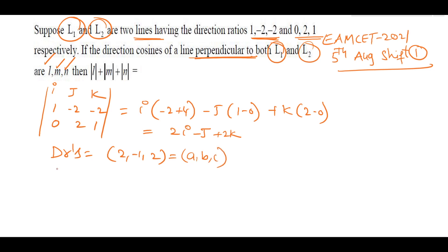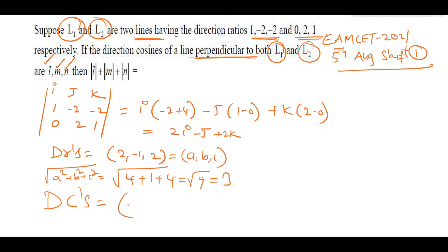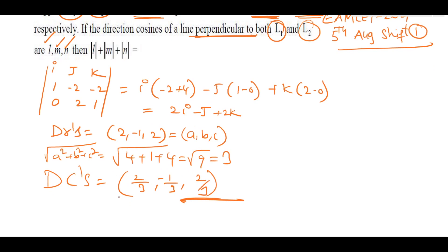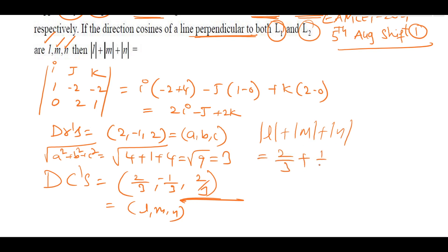With a=2, b=−1, c=2: √(a²+b²+c²) = √(4+1+4) = √9 = 3. Direction cosines are (2/3, −1/3, 2/3), which are l, m, n. Therefore |l| + |m| + |n| = 2/3 + 1/3 + 2/3 = 5/3. That is the required answer.